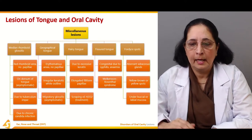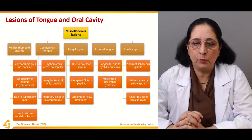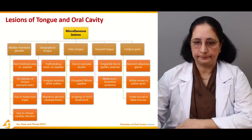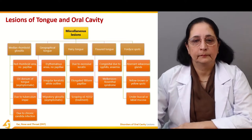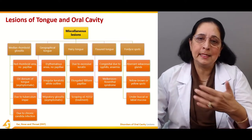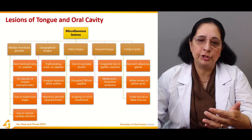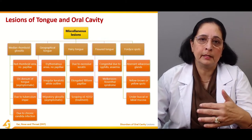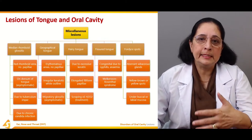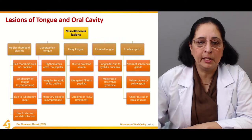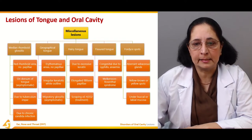Fordyce spots are found under the buccal or labial mucosa. These are some common miscellaneous lesions of the oral cavity.